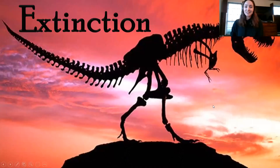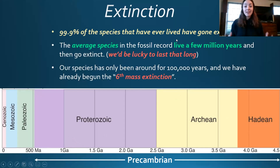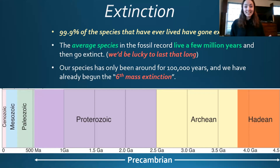Hi everyone! Today we're going to be going over extinction. It is estimated that about 99.9% of all species that have ever lived on Earth have gone extinct. That statistically basically means all things have gone extinct. But we're still here and there's a lot of other living things that are still on Earth today — which just speaks to how many species must have lived before us.